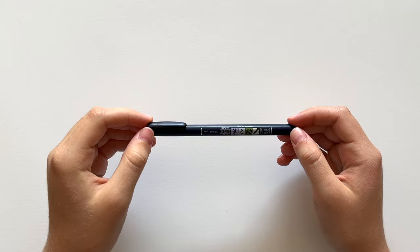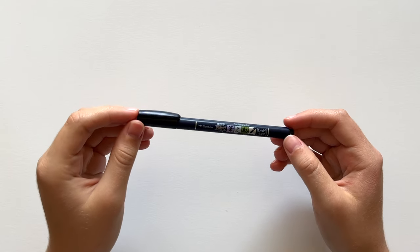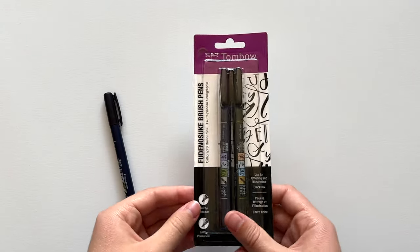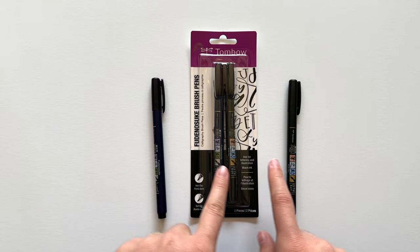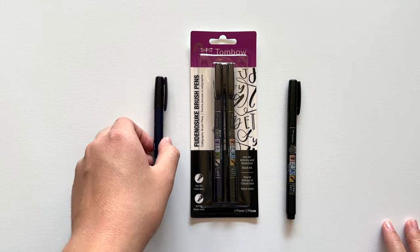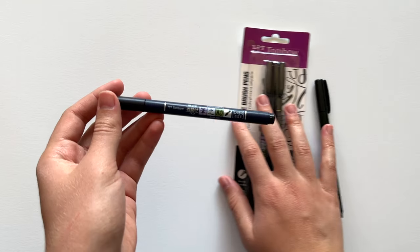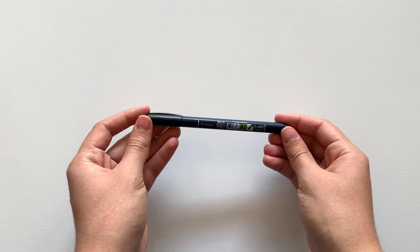So first a brush pen. I recommend getting a Tombow Fudenosuke brush pen. They come in a two pack like this with a hard tip and then a soft tip. I recommend starting with the hard tip pen which has the navy blue colored barrel with silver accents.